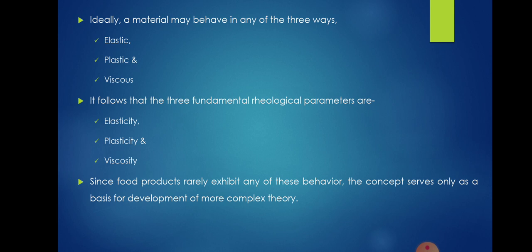Ideally, a material may behave in any of the 3 ways: it can behave like elastic, it can behave like plastic material, or it can behave like viscous material. It follows that the 3 fundamental rheological parameters are elasticity, plasticity, and viscosity. If the material behaves like elastic material, it means it must have elasticity in it. And if it behaves like viscous material, it should have viscosity. Since food products rarely exhibit any of these behaviors, the concept serves only as basis for development of more complex theory.